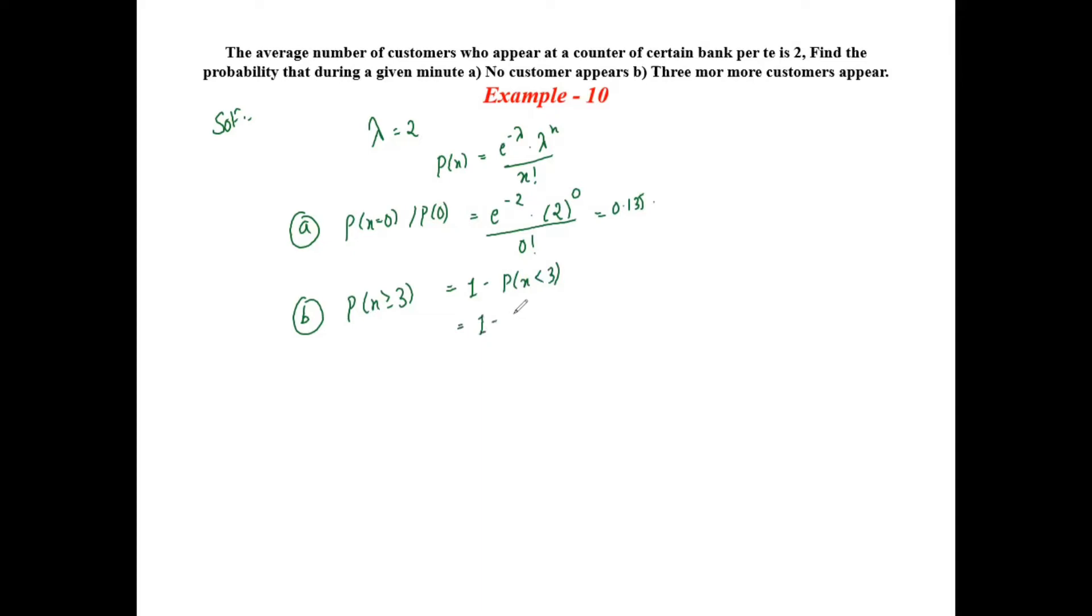And 1 minus P(X less than 3) means P(X is equal to 2) plus P(X is equal to 1) plus P(X is equal to 0). So we can find these separately. P(X is equal to 2) can be calculated using the same formula.